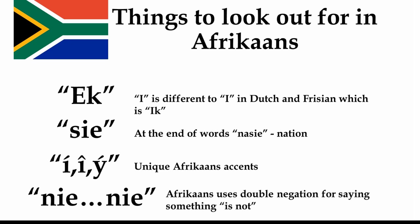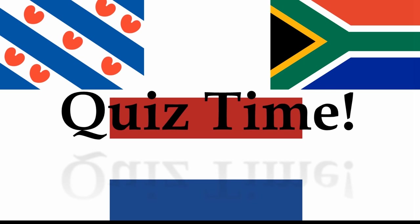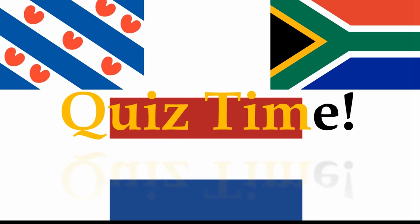And finally, we have the double negation for saying something is not. If you know a bit of French, you'll know that you use 'ne' and then the verb and then 'pas'. It's exactly the same in Afrikaans. 'Is nie lekker nie' means 'it's not nice'. You can tell this is a dead obvious giveaway because it's the only language out of these three that uses this double negation with 'nie' and 'nie'. I hope you've been paying attention because it's about to pay off — it's quiz time, folks.